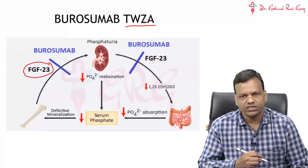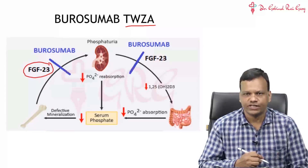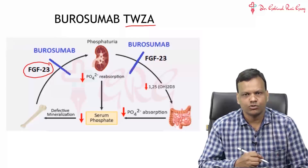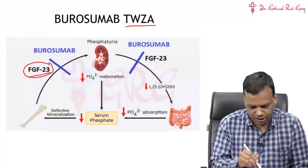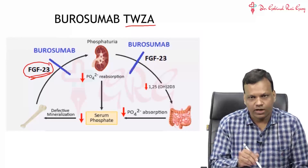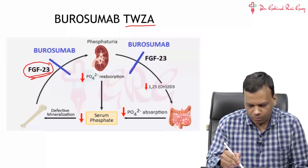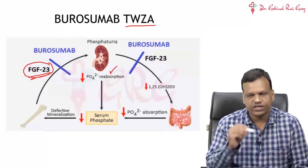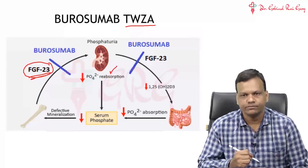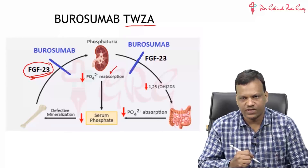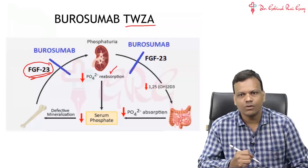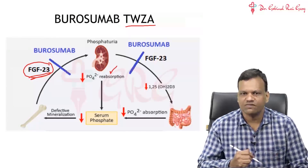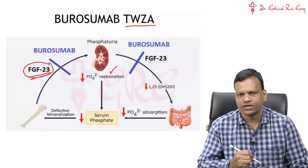What is the normal function of FGF23 or fibroblast growth factor 23? It does two important functions. One: it inhibits the absorption of phosphate from the kidney. Phosphate is filtered by the kidney and then reabsorbed, and this reabsorption is prevented by fibroblast growth factor 23.